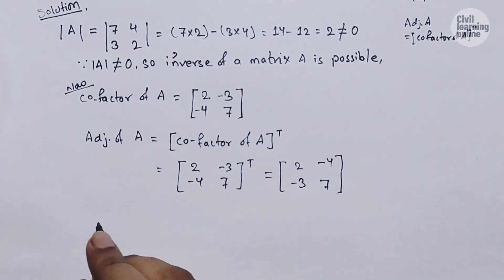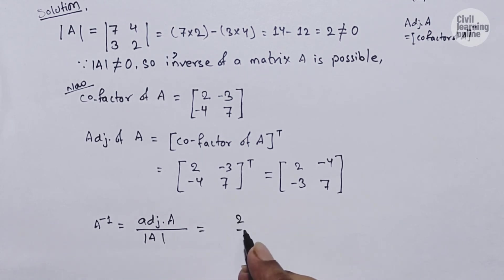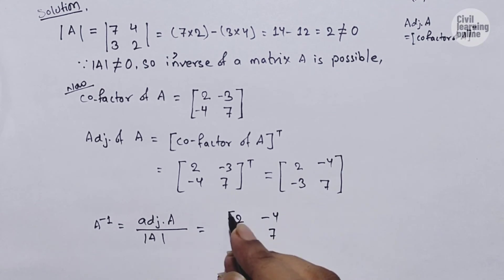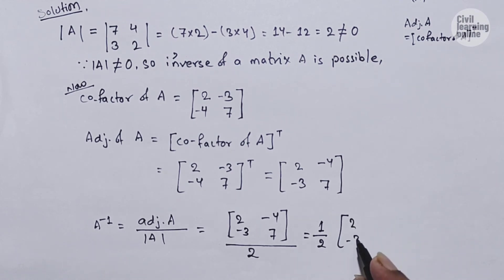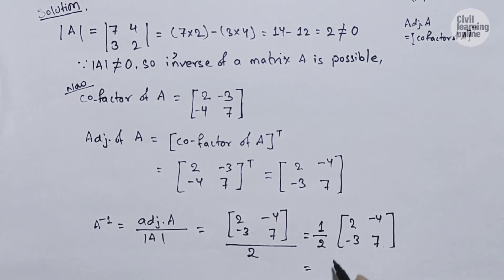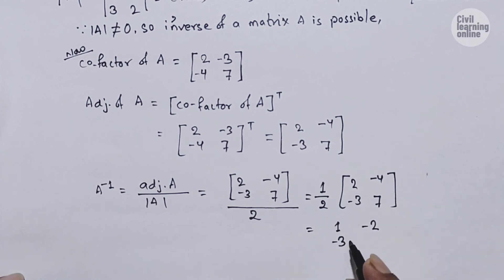Now A inverse equals adjoint of A divided by the determinant of A, which is [2, -3; -4, 7] divided by 2. You can write this as (1/2) times [2, -3; -4, 7], or divide each element by 2: 2÷2 = 1, -3÷2 = -3/2, -4÷2 = -2, and 7÷2 = 7/2. So A inverse = [1, -3/2; -2, 7/2].